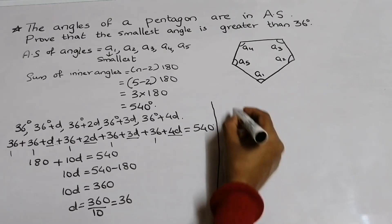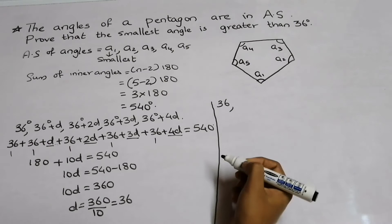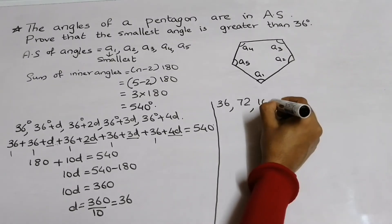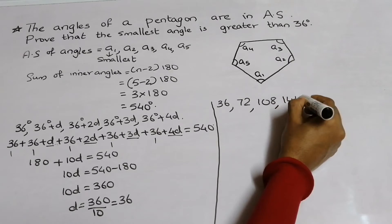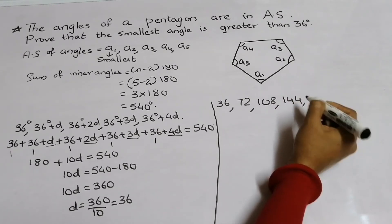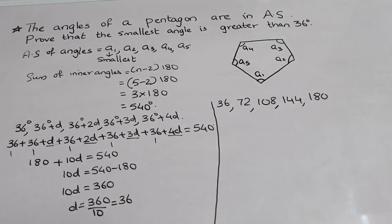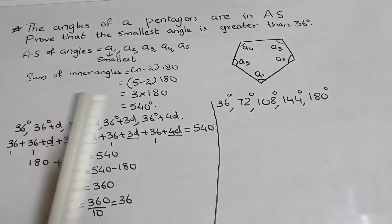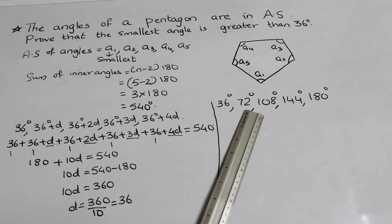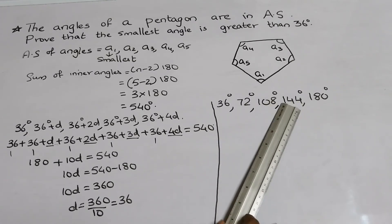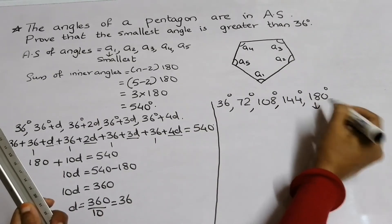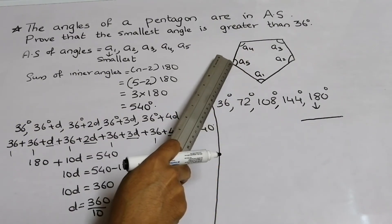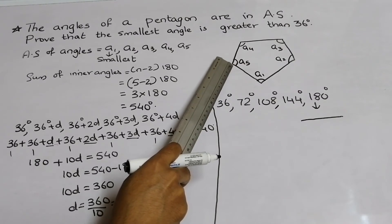Writing out the sequence with A1 = 36 and d = 36: the five angles are 36, 72, 108, 144, and 180 degrees. Do you notice something? The fifth angle is 180 degrees, which means it is a straight line — an angle of 180° cannot form a vertex of a polygon. So A5 cannot be 180 degrees.